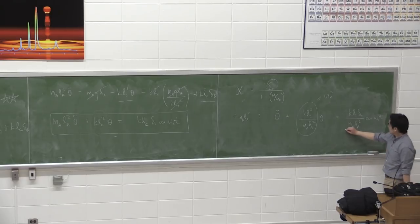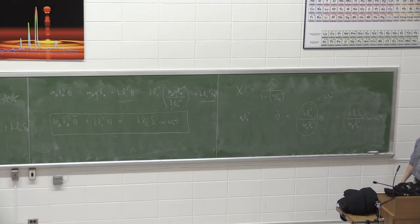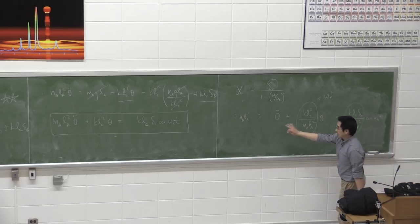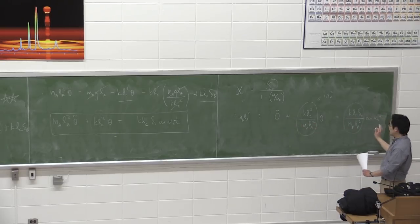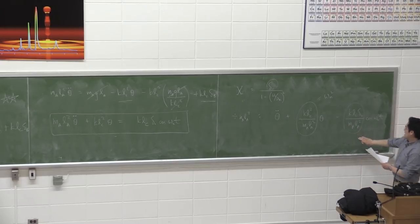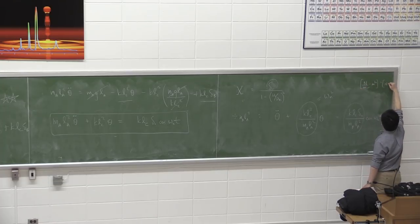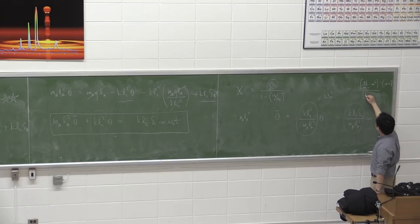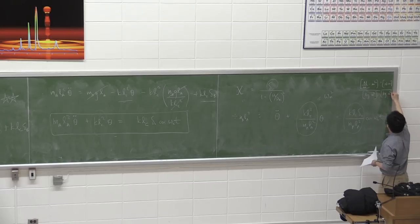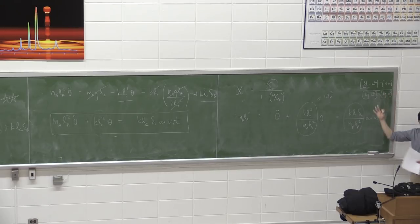Let's check units on the right-hand side: k·LC·δ is N/m × m² = N·m, and mA·LA² is kg·m². So N·m / (kg·m²) = rad/s², which is exactly what we need — radian per second squared. That confirms the units are consistent.